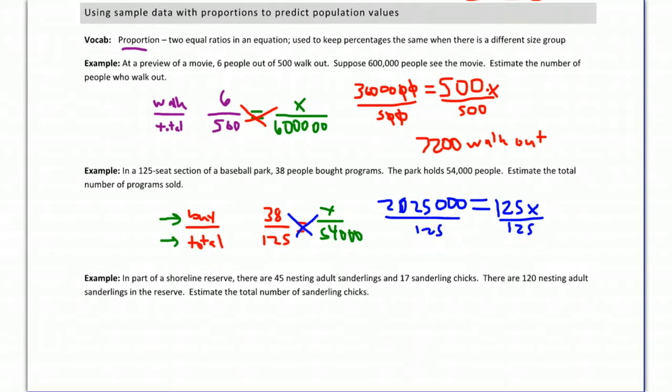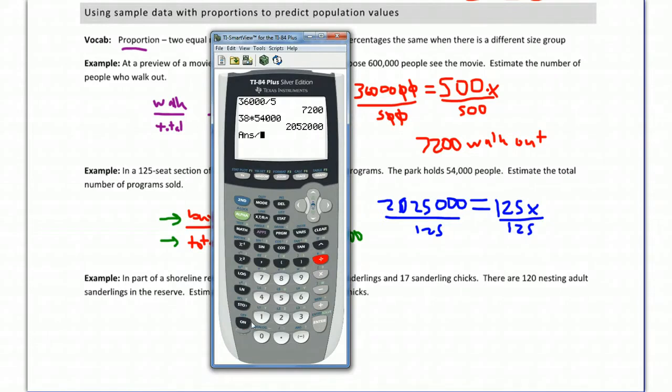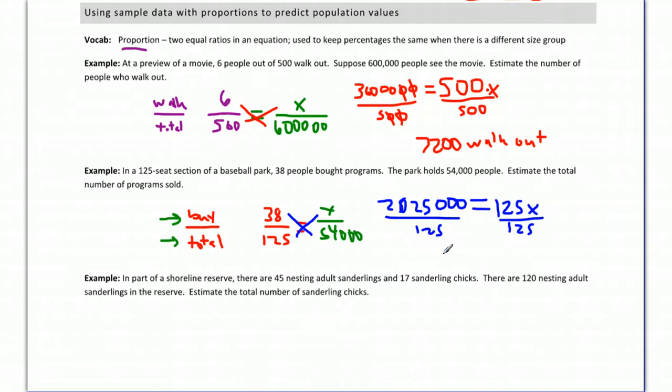Since that's the case, we want to get x by itself. Divide both sides by that 125. And that's going to leave us with 16,416. And what we're solving for is the total number of programs sold. So that would be how many programs they expect to sell. Now they're assuming that they have pretty good information from that one section.